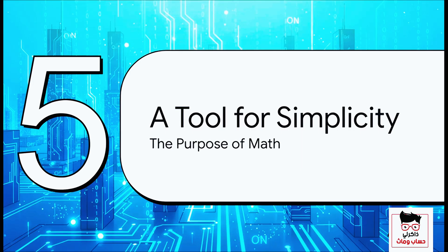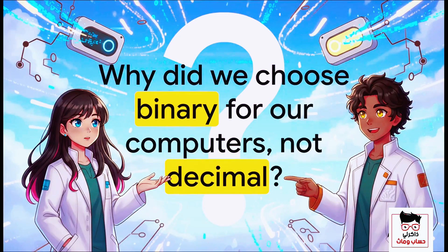So when you really step back and look at the whole story — all the way from our 10 fingers, to the Babylonians tracking time, to the electrical pulses inside a tiny silicon chip — a really powerful theme starts to emerge. Why did we ultimately land on binary for our computers? It wasn't because it was more complex or more powerful in some abstract way. We chose it because it was simpler — the easiest, most reliable way to make an incredibly complicated thing, computation, actually work in the physical world.